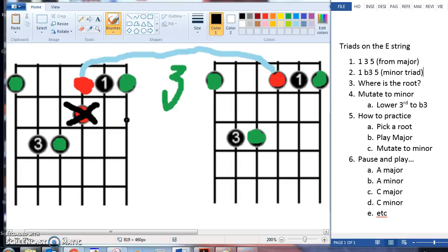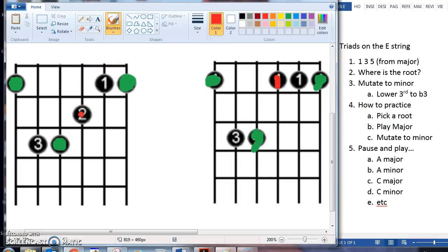So the way to practice this is to pick a root, play it major, so you're playing major, and then you release this note, release this pitch so it moves down here, and then you have the minor sound. So play your major chord, strum it, release your finger, play your minor chord, strum it. Make sure they sound different. You can hear all the pitches.